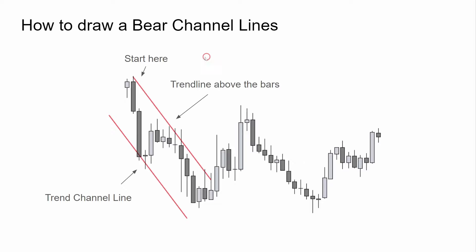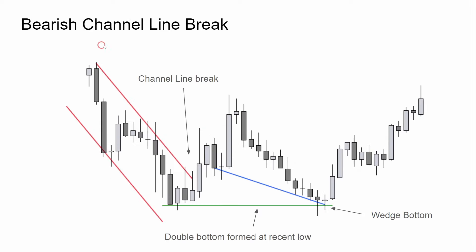How to draw bear channel lines: you start here and pull it down containing the price action — this also acts as resistance. The line opposite is called the trend channel line, drawn after the first line containing the bear price action. Bearish channel line break: we can see the same channel, with bulls making a strong two-legged push up breaking the bearish channel line and coming for a retest of the lows. This creates a double bottom at the recent lows. Here is the wedge bottom giving one, two, and three pushes down, which also led to two legs higher for the bulls.